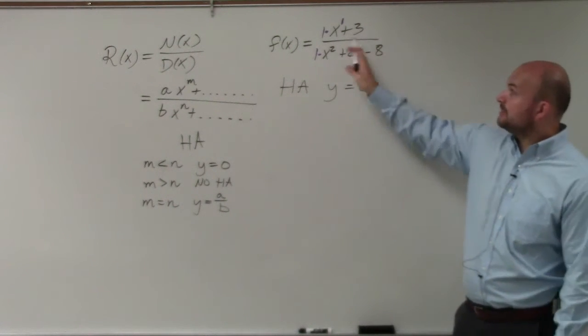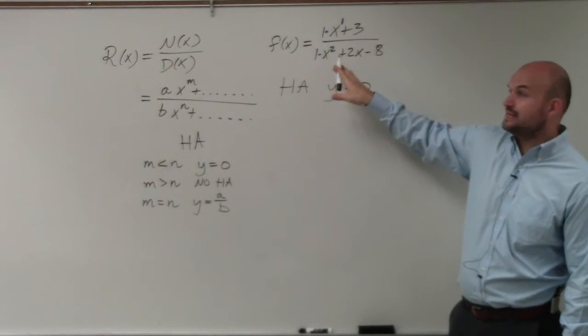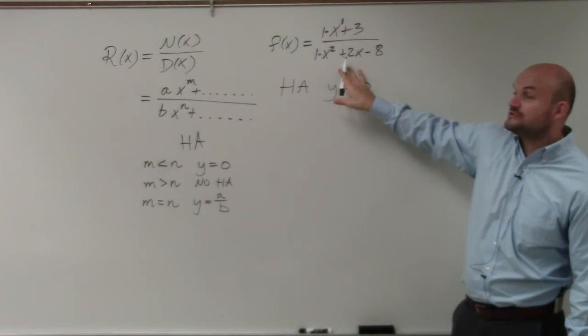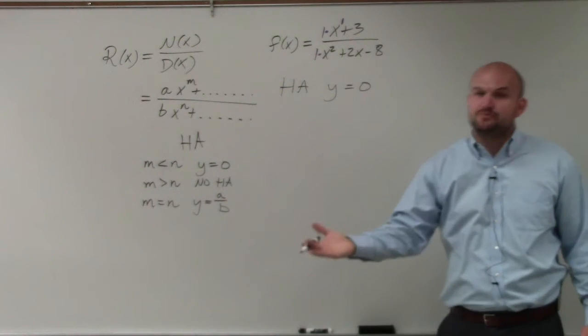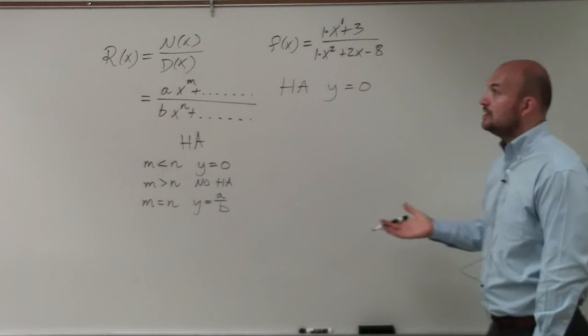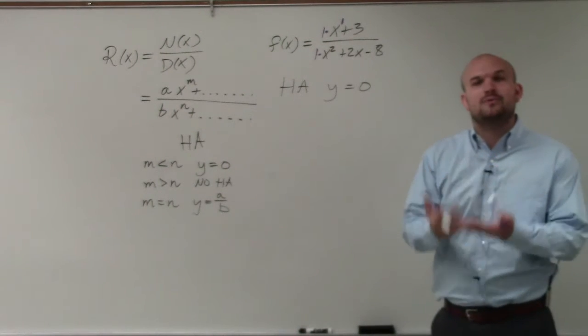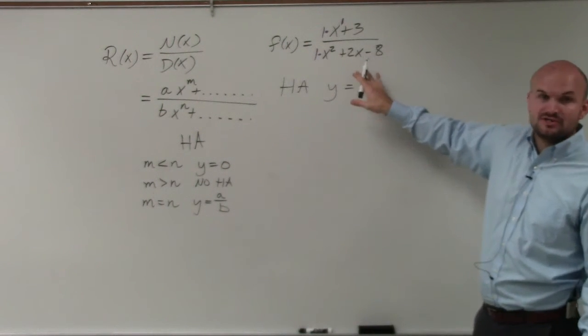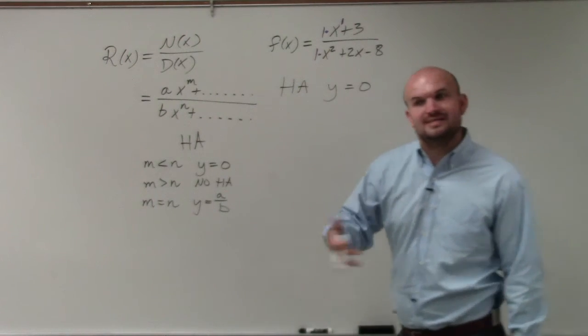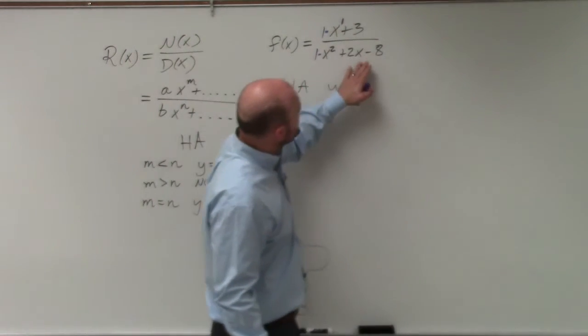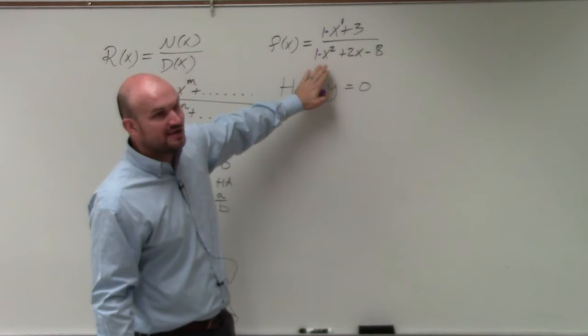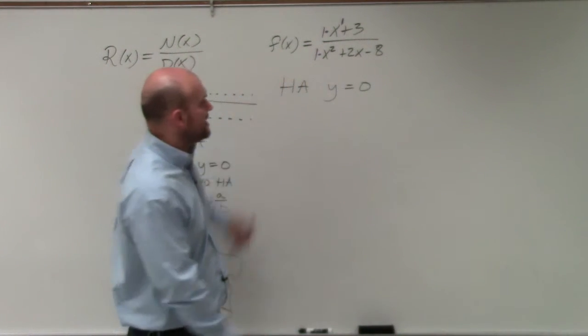To determine the vertical asymptote, we need to identify what values make the denominator equal to 0, because those values are not in the domain and will produce our vertical asymptotes. But that's not always the case - we have to be careful not to always assume whatever makes the denominator 0 is an asymptote. What we want to do first in this problem is simplify it, because not every value is going to be an asymptote.